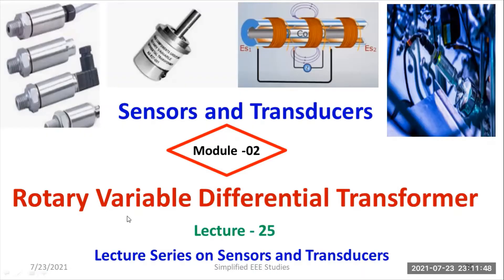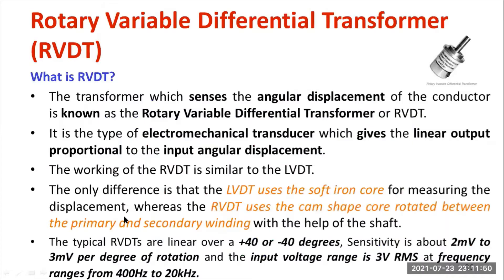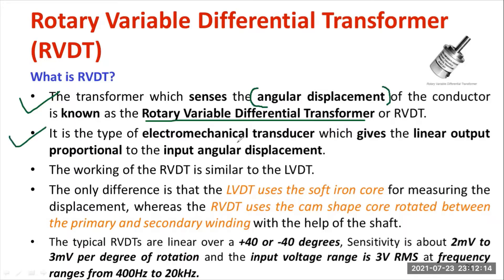Let us understand what is meant by RVDT or Rotary Variable Differential Transformer. The transformer which senses the angular displacement of the conductor is known as RVDT. It is mainly used for measurement of angular displacement, and it is a type of electromechanical transducer because it comprises an electrical part as well as a moving element. It gives a linear output proportional to the angular displacement.